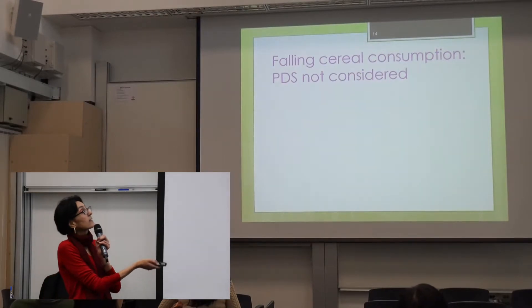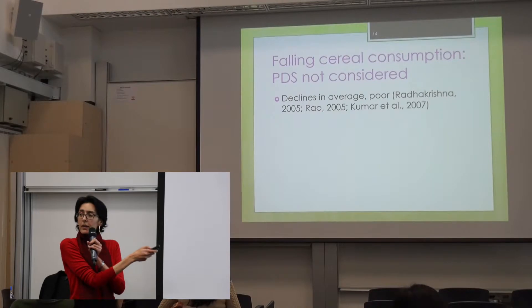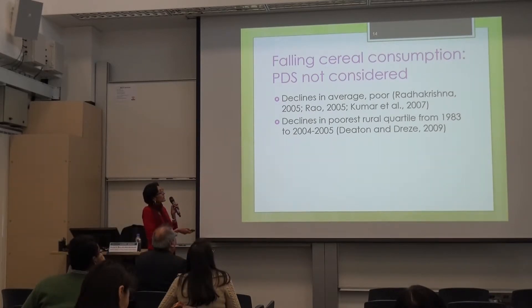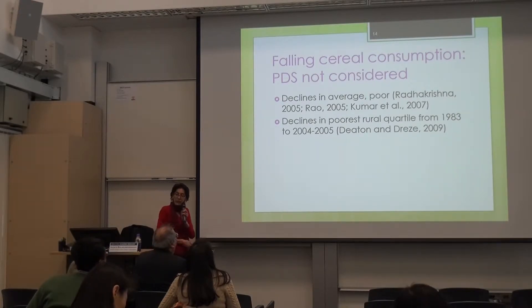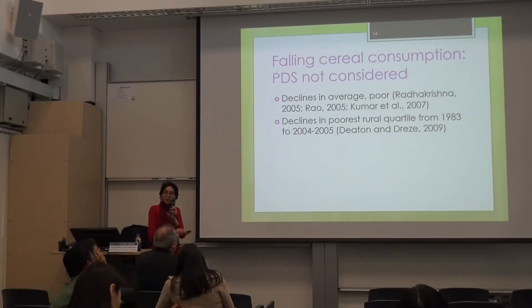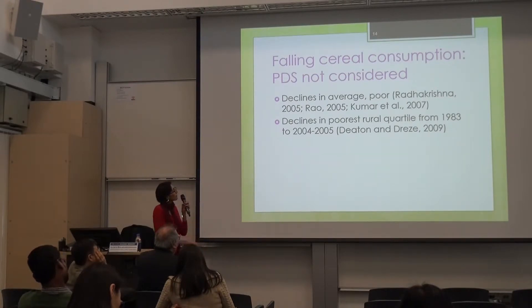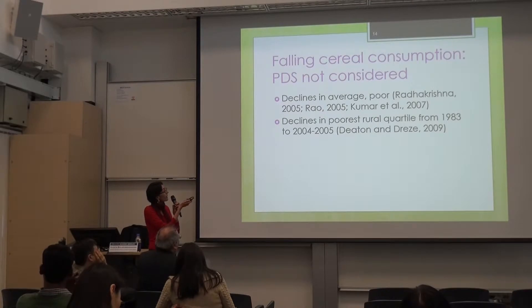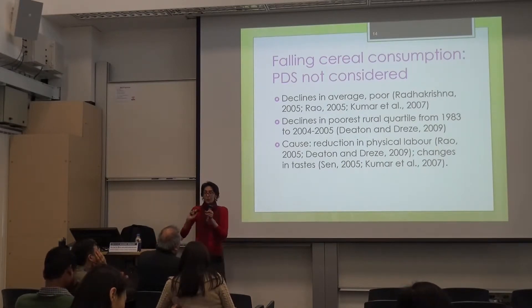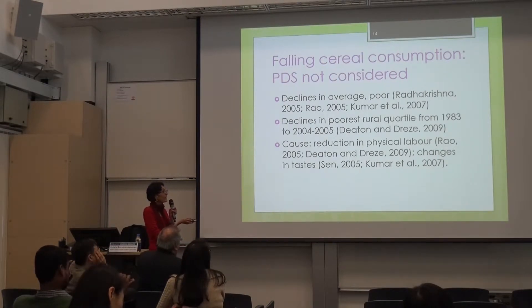Apart from the PDS impact studies, there have been general studies in India showing falling cereal consumption over long periods of time — both average consumption and consumption among poor households, from the 1980s up until the mid-1990s. Mostly the period they cover is before subsidies began being targeted to the poor. There is one study — the Deaton and Drèze study of 2009 — showing that in the poorest rural quartile from 1983 to 2004-05, cereal consumption actually decreased. However, none of these studies looks at how PDS grain provision to poor households changed during the period in which their cereal consumption fell.